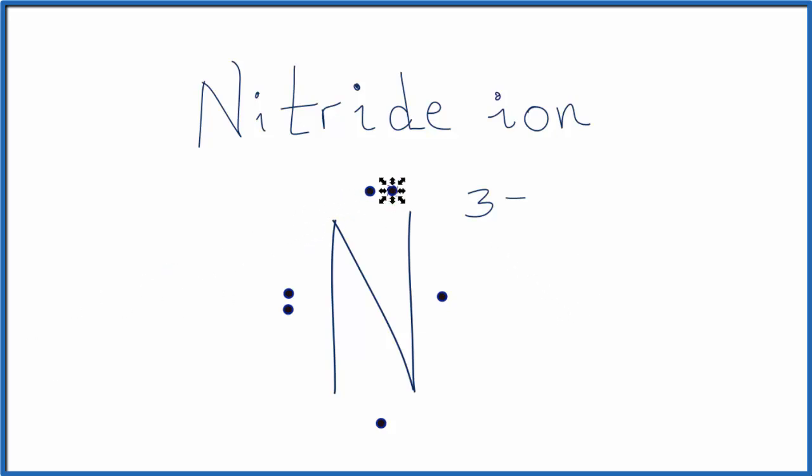Electron up here, they come in pairs. And that gives us a total of 8 valence electrons. And when we do that, for nitrogen, now this nitride ion, we have a full outer shell. We have an octet. And that's the reason that nitrogen becomes minus 3 when it forms ions.